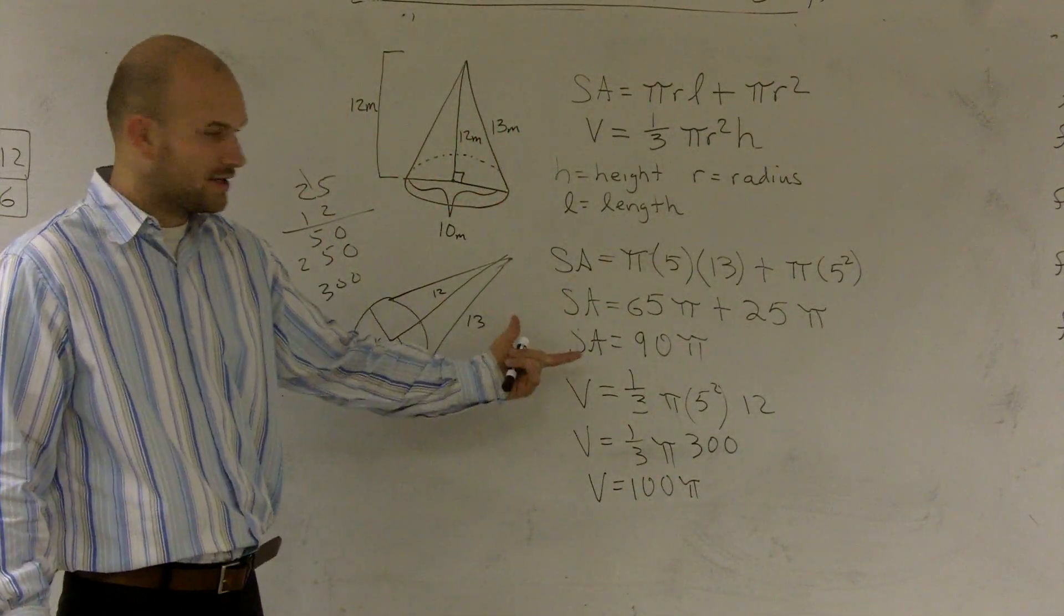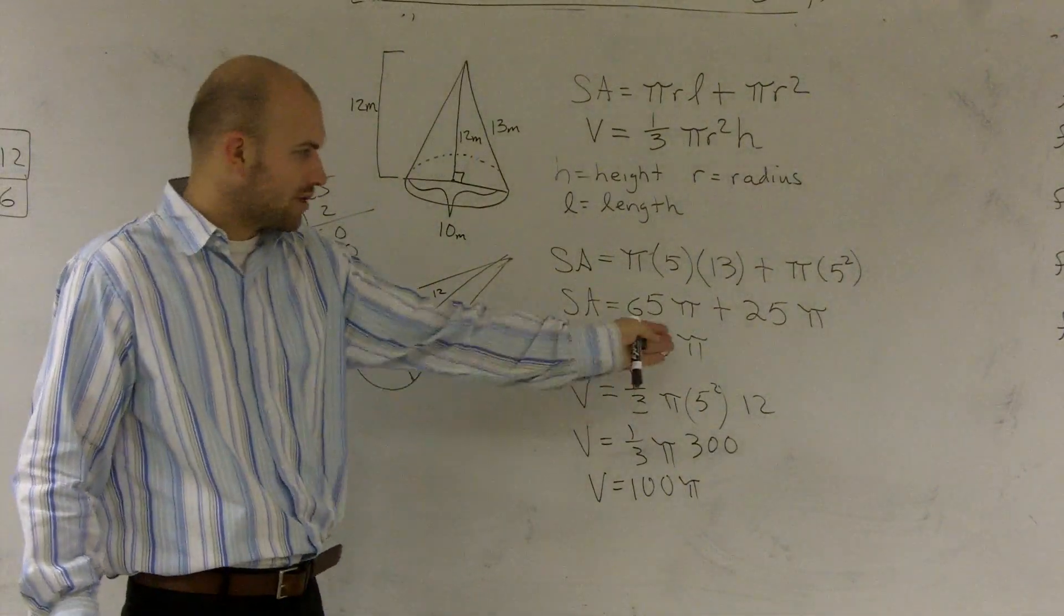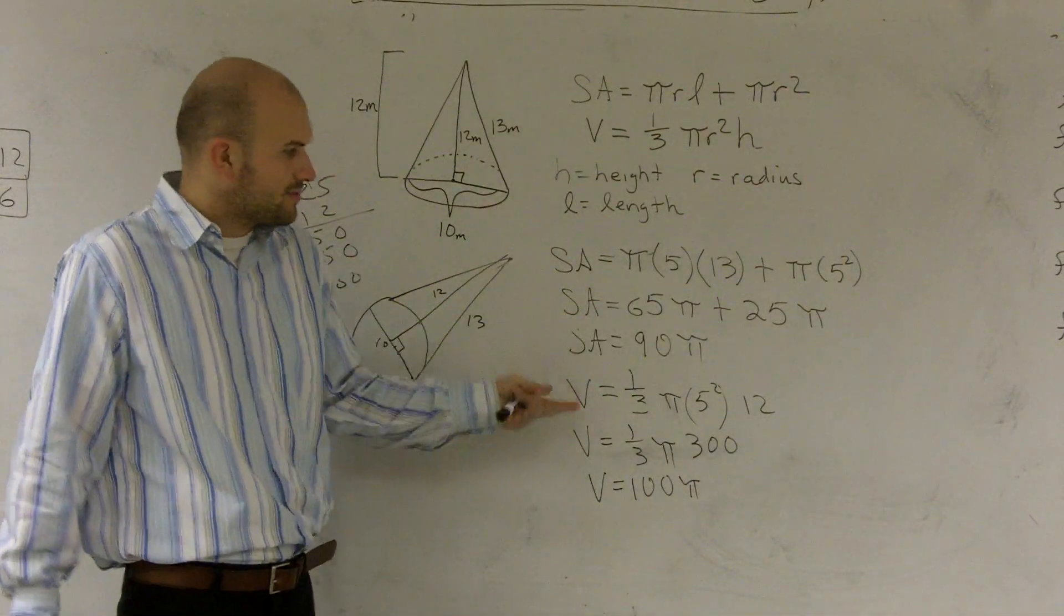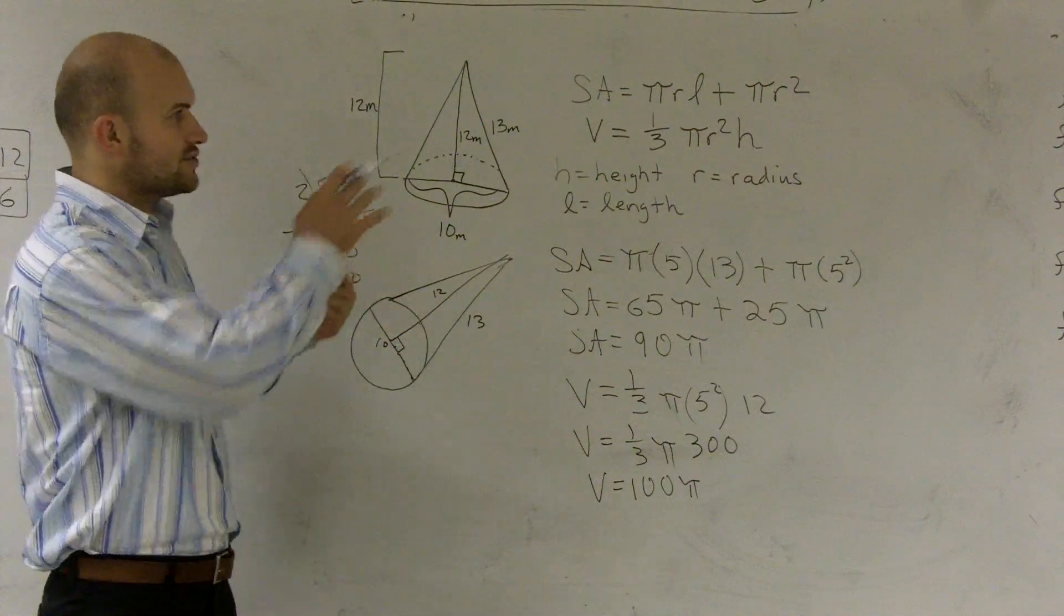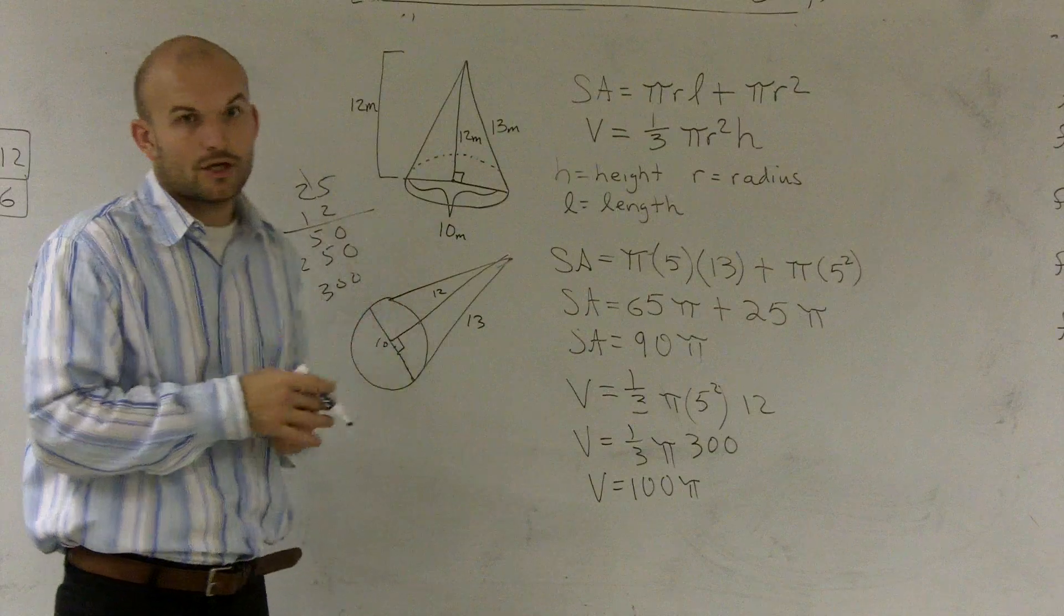If you want to use a calculator and get an approximate value, you could plug in pi and multiply. But your exact answer in terms of pi are those two values. That's how you find the surface area and volume of a cone.